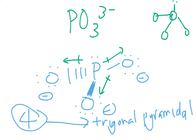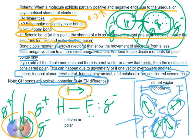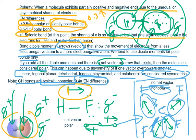To determine polarity, we have to see whether a net vector exists. If it exists, then it's polar; if there's no net vector, then it's nonpolar. You can think of the vectors as a tug of war. If there's a central atom and two electronegative atoms pulling equally in opposite directions, then they pull equally hard to the left and to the right — these forces cancel out and the electrons won't move anywhere, so the net pull is zero.